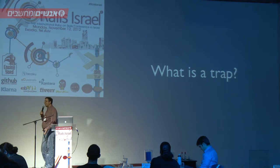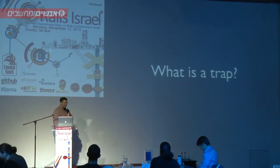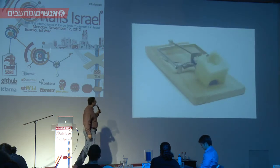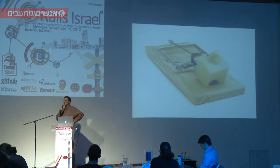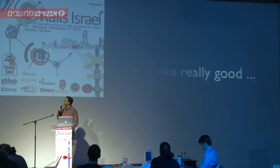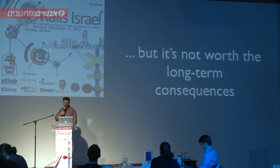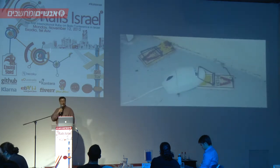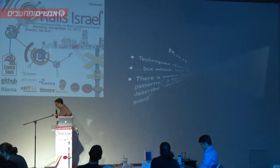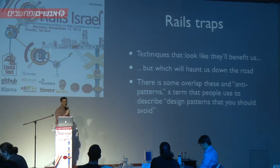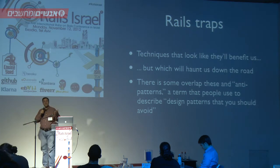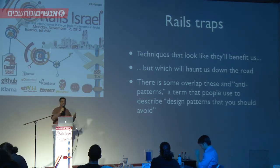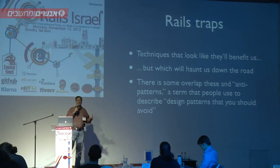So the first question is: what is a trap? Look at that yummy cheese — it looks amazing. But if you get a bigger picture and look back a little bit, maybe that cheese looks good, but the context around it is not so good. It doesn't look worth the long-term consequences, because if you go for that cheese, the mouse gets stuck in the trap. Rails traps are basically things that seem really good and look like they'll benefit us right away, but at some point they're going to hurt. We should at least think about what we're going to do before we actually do it.